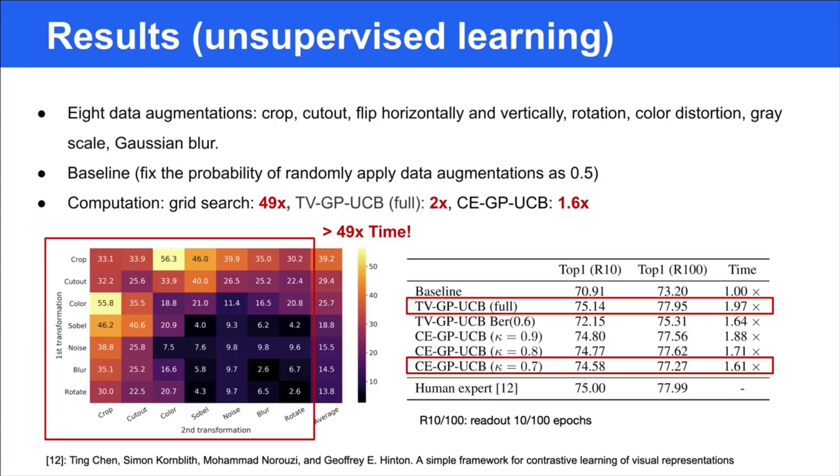Researchers conducted extensive ablation studies on the data augmentations. By contrast, we aim to apply the cost-effective GP-UCB in tuning the probability of randomly applying eight common data augmentations. Similar to STN, we define the accuracy gain on the validation set as the costly feedback, since training one linear readout layer on the validation set from scratch is expensive. We show that with 1.6 times regular training time, we can achieve similar performance compared to baselines that have been extensively tuned by human experts.